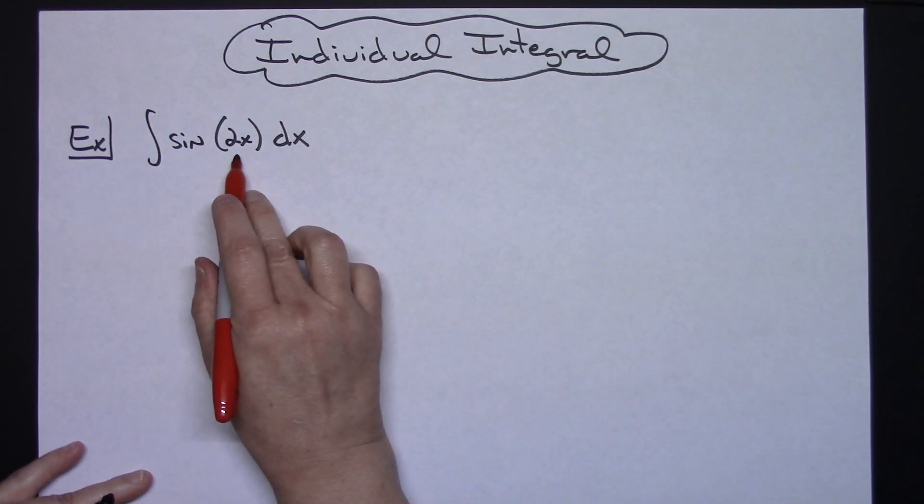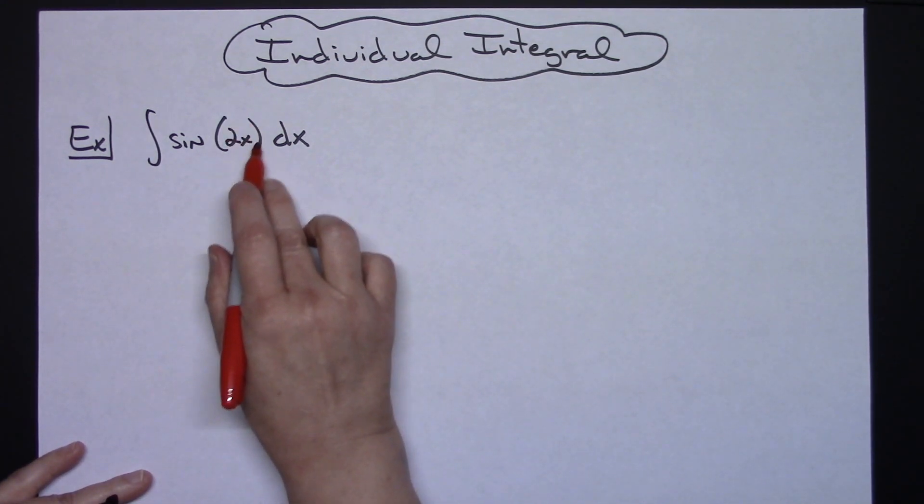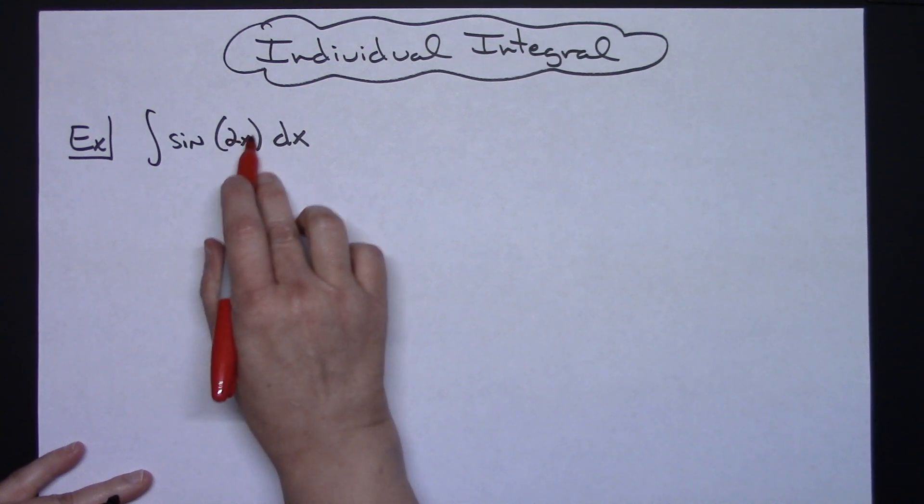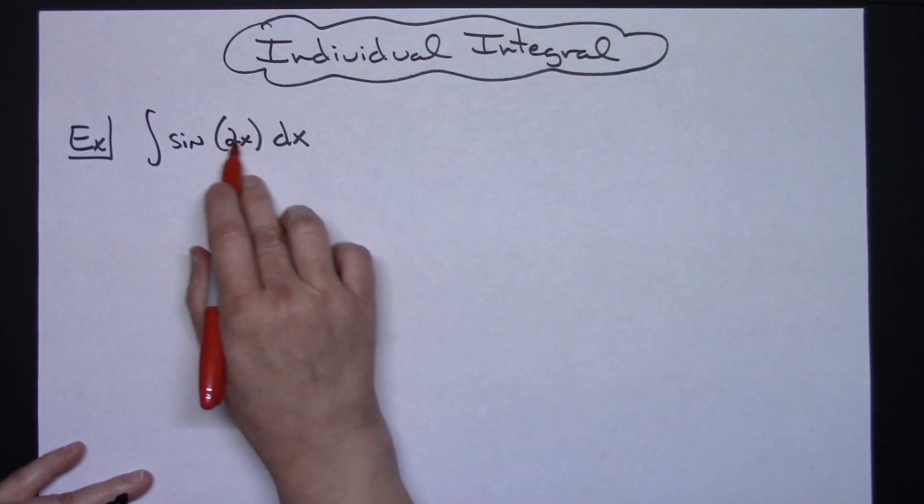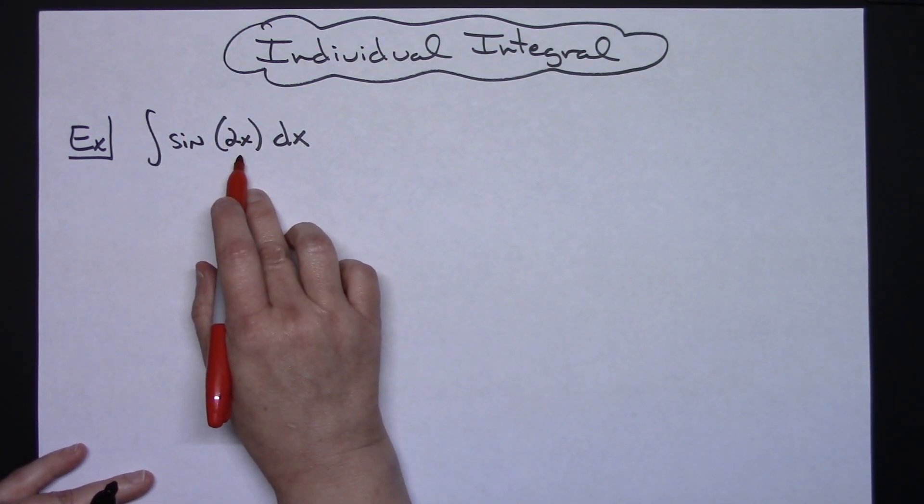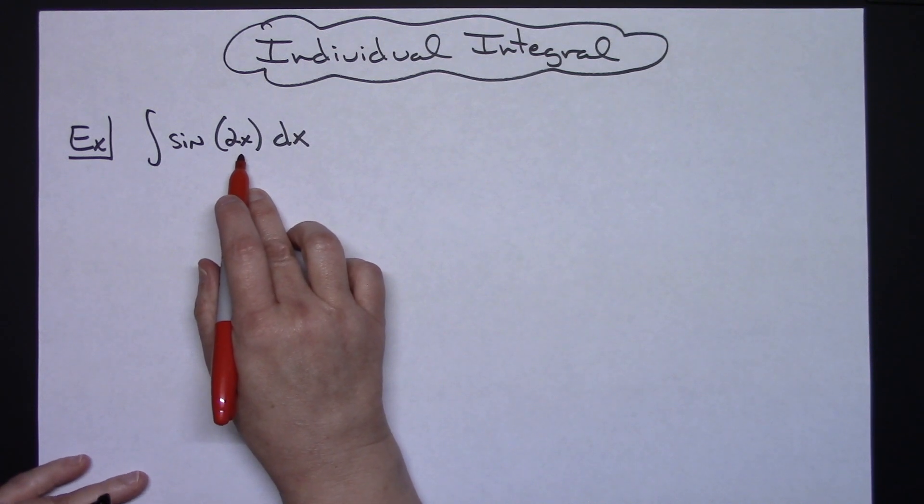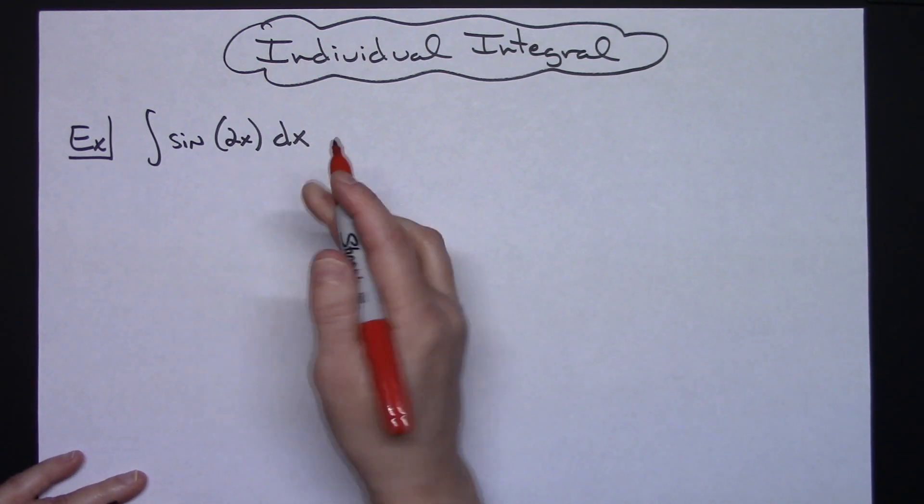I've got the integral of sine 2x dx. If I can look at this function and realize I have an inside function and an outside function, that inside function is really a good first place to start for letting your u equal that quantity.